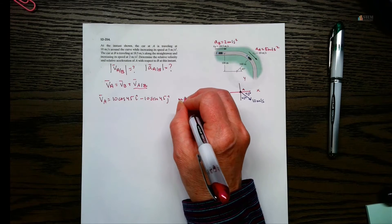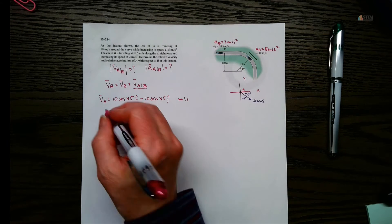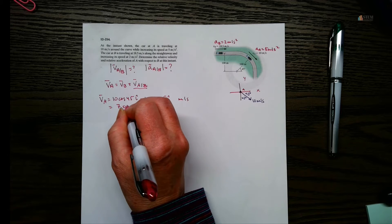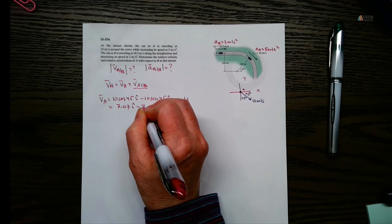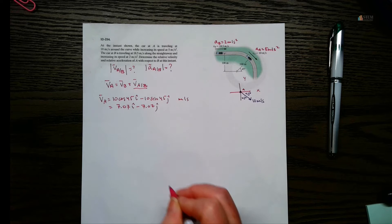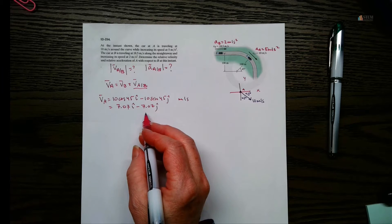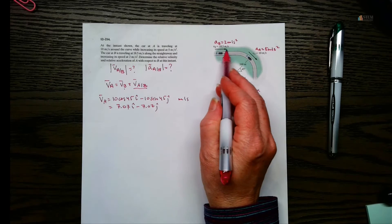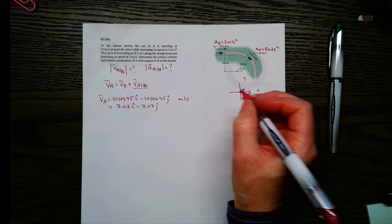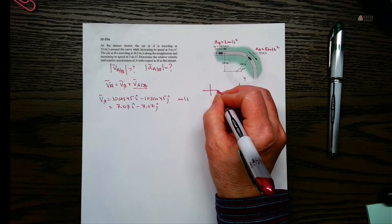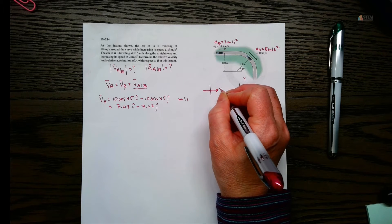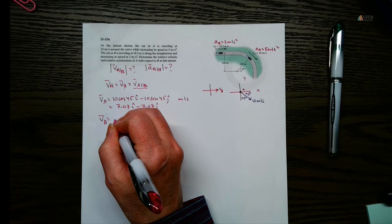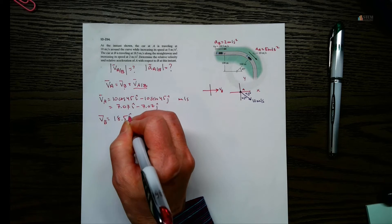That's in meters per second. Since it's 45 degrees, your numbers are going to be the same: 7.07 I minus 7.07 J. That's V_A. Now I need velocity of B. Velocity of B is just on the X axis along the straight path, so V_B is simply 18.5 I.